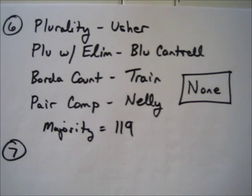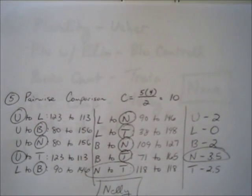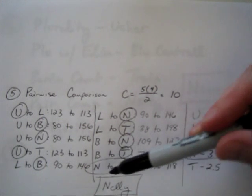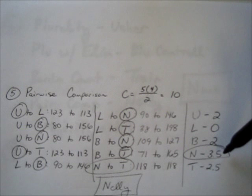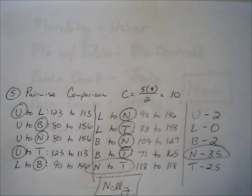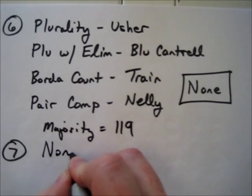Problem seven requires careful reading of the head-to-head criterion: if a candidate is preferred head-to-head over every other single candidate, that candidate should be declared the winner. Consulting our pairwise comparison data, was there any candidate preferred over every other? No — Nelly was close but tied with Train, so Nelly wasn't preferred over every other candidate. Therefore none of the methods violate the head-to-head criterion, and the answer is also none.